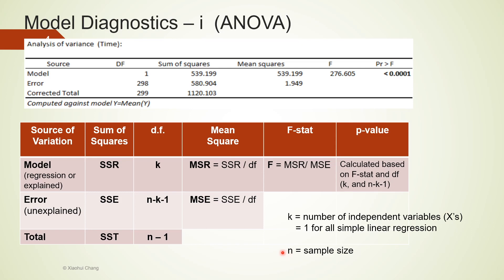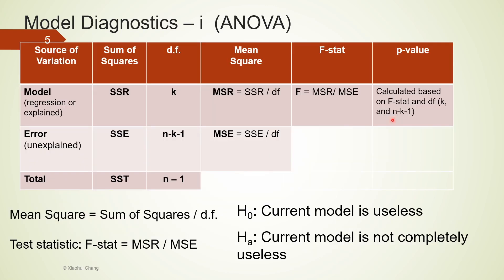We have finally finished explaining all the numbers in this table. Let's take a look at how we can use this table, or more specifically the F-stat, to answer whether this regression model is a good model or not. For ANOVA analysis, we are carrying out a hypothesis test, in particular an F-test, to see whether the model is useful or not. The null hypothesis is the model is useless. And alternative hypothesis is the model is not completely useless, or alternatively, the model is somewhat useful. The test statistic is F-stat. And the p-value would be able to help us to determine whether this model is useful or not. If the p-value is very small, we reject the null and claim the model is useful. If the p-value is large, we fail to reject the null and conclude the model is useless.